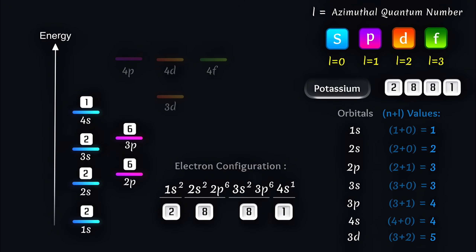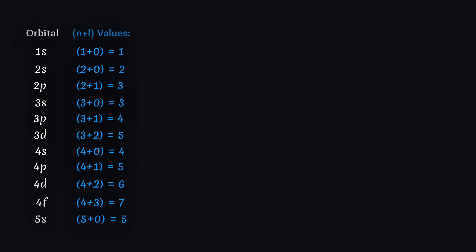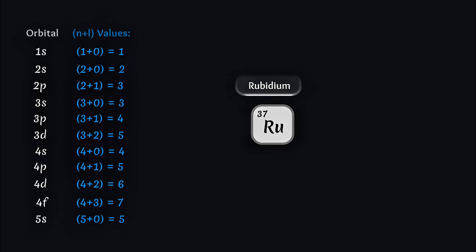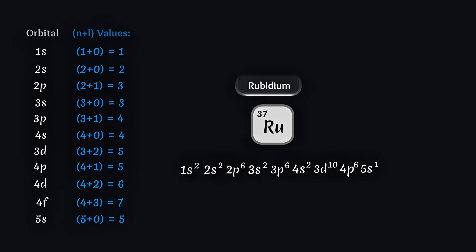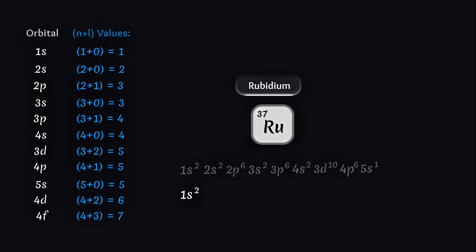In a potassium atom, the first shell has 2 electrons, the second shell 8, the third shell 8, and the fourth shell 1 electron. If we apply the N+L rule to rubidium, the electron configuration will be 1s²2s²2p⁶3s²3p⁶4s²3d¹⁰4p⁶5s¹. Here the 4s orbital is filled before the 3d orbital, and the 5s orbital is filled before the 4d and 4f orbitals. For clarity, the configuration can also be written in order of increasing shell number: 1s²2s²2p⁶3s²3p⁶3d¹⁰4s²4p⁶5s¹.